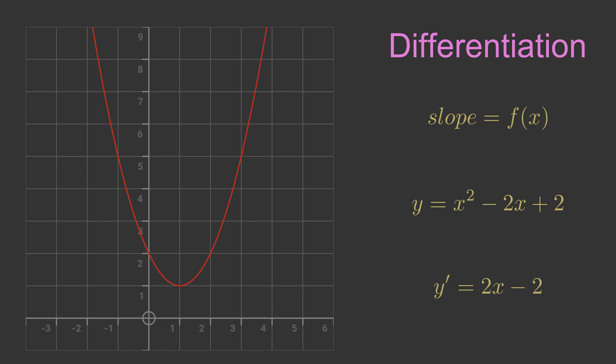We use the notation Y prime to indicate the slope of Y. The process of calculating the slope as a function of X is called differentiation. The resulting function Y prime is called the first derivative of Y.